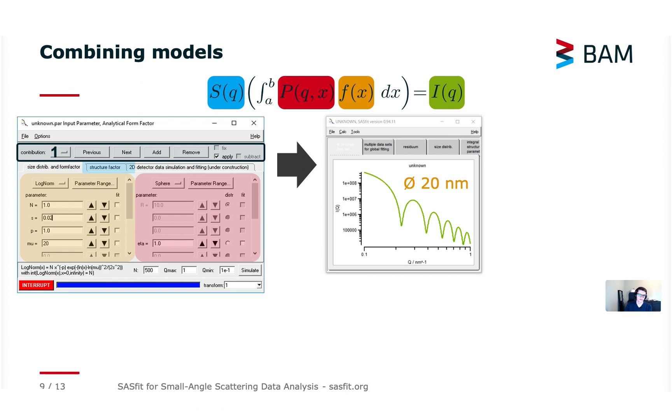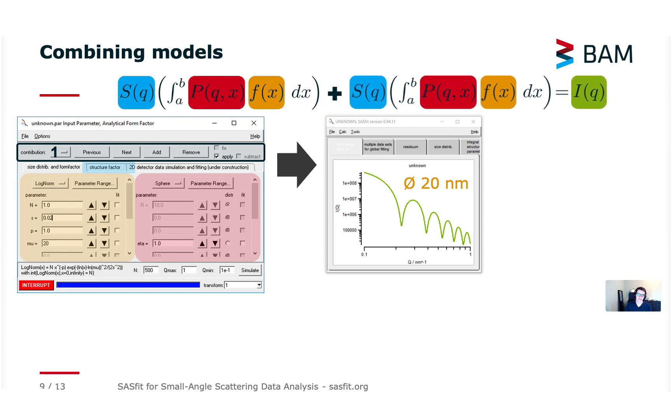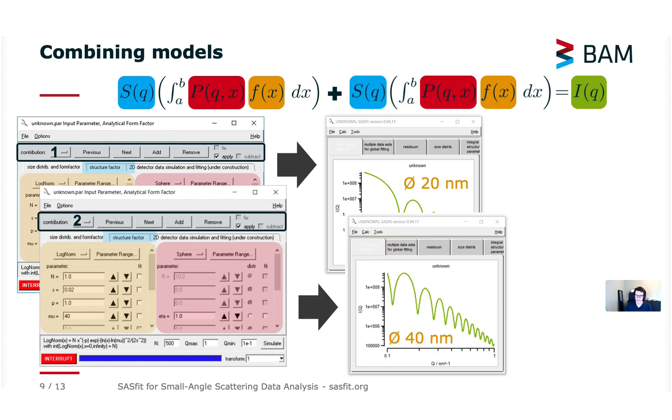First I configured a sphere with 20 nanometer radius with some size distribution or polydispersity applied and then I would add another contribution of a sphere which is just slightly bigger for example 40 nanometers and also with the polydispersity applied and the result of the intensity will then be the sum of the two intensities of the two models I configured.